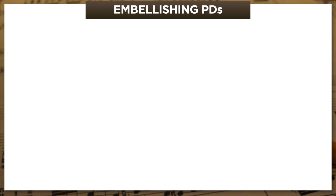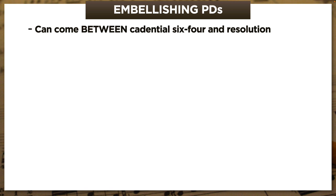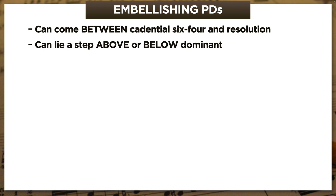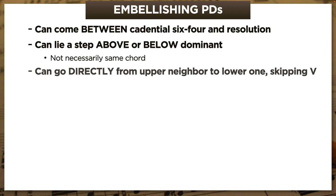All right, review time. So far, we've seen that backtracking PDs in this pre-cadential category can actually come between a cadential 6-4 and its resolution. We've also seen that they can lie a step above or a step below the dominant. And when we get both, they don't need to be the same chord, obviously. The last thing I'll show you is that we can go directly from an upper neighbor to a lower neighbor—or vice versa—skipping 5 in the process.